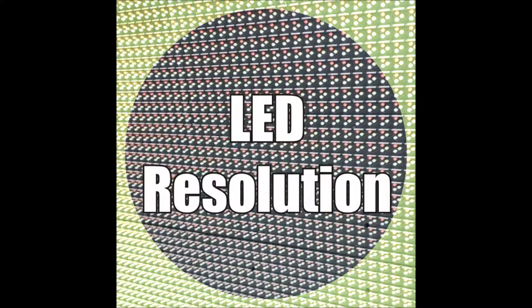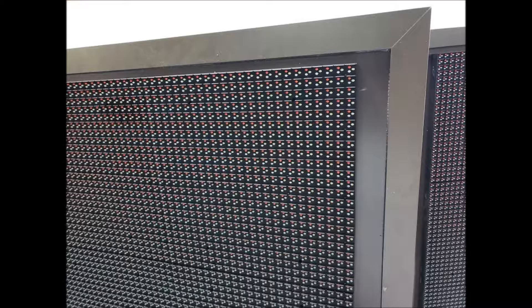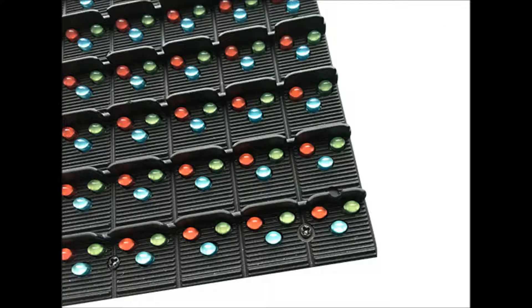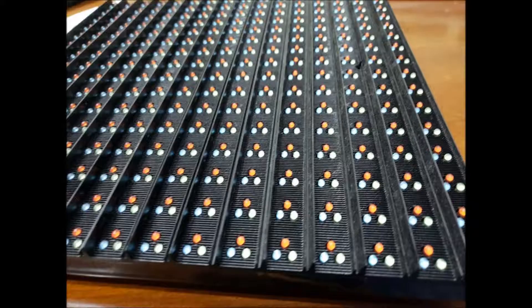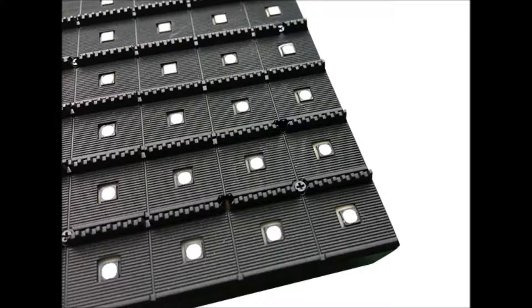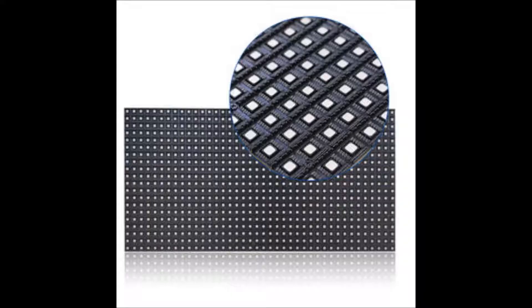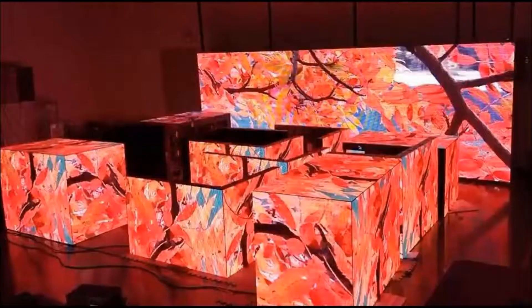To understand LED resolution, we will first go through a description of the LED pixels themselves. Each LED pixel is a cluster of three LEDs: one red, one green, and one blue — typically referred to as RGB. This can be in three independent LEDs, which is a DIP cluster, or a single embedded pixel, which is an SMD chip. Each option, when the proper gray scaling is applied, can achieve 281 trillion colors.